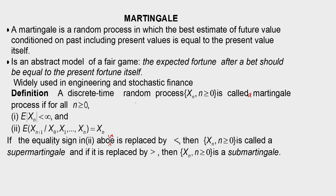If the equality sign is replaced by a less-than inequality, then the process X_n is called a super martingale — in that case this conditional expectation is less than X_n. If the equality is replaced by a greater-than inequality, then the process is called a sub martingale. So: martingale uses equality, super martingale uses less than X_n, and sub martingale uses greater than X_n.